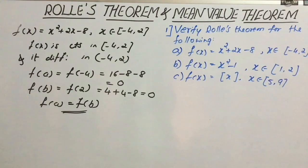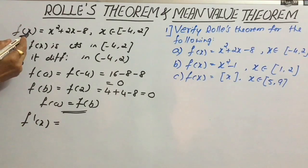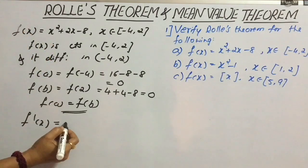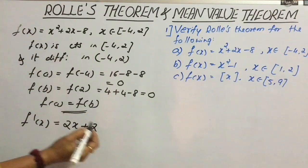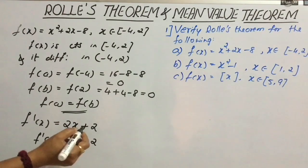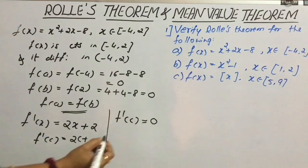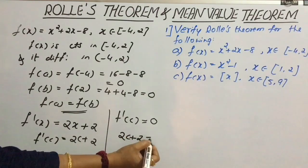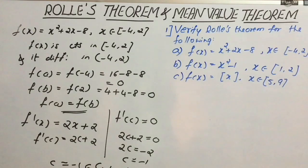This is the first condition to be satisfied to verify Rolle's theorem. Now consider the derivative f'(x). If we find the derivative, we get 2x + 2. Now get f'(c) = 2c + 2. Consider f'(c) = 0, that means 2c + 2 = 0, so 2c = −2, c = −1. Here c = −1 belongs to the open interval (−4, 2), so we can conclude that Rolle's theorem holds good.